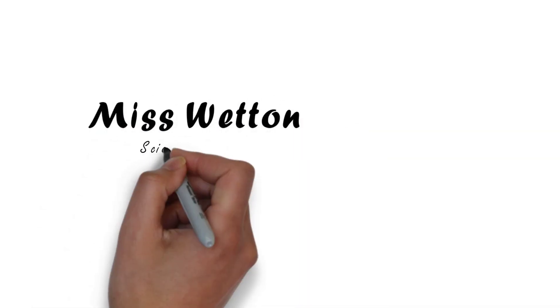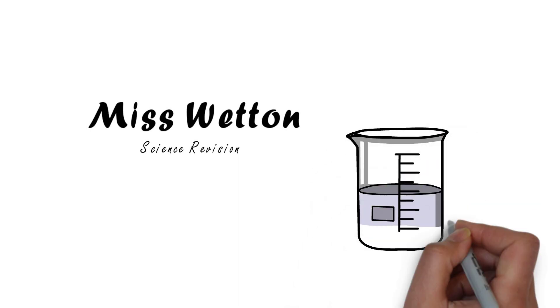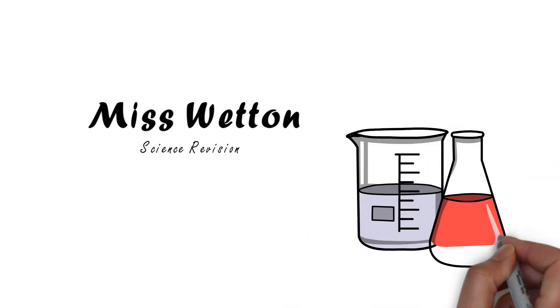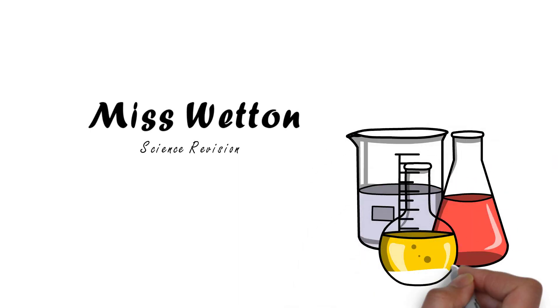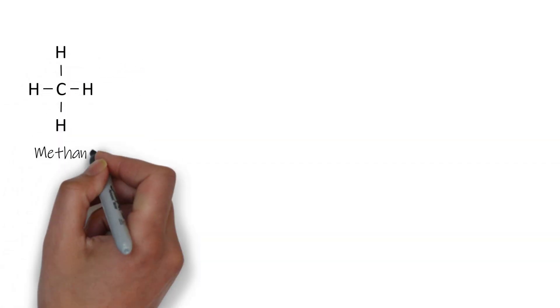Hello everybody, welcome to Miss Wetton's Science Revision. In this video we're going to look at how you can explain why the boiling point of different simple covalent substances is different — why one covalent compound has a higher boiling point than another. It all has to do with intermolecular forces.